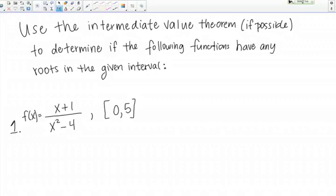Let's look at number 1. In number 1, the function that we're given is a rational function, f of x equals x plus 1 over x squared minus 4, and the interval we're considering is from 0 to 5.